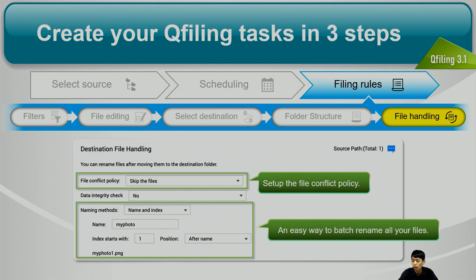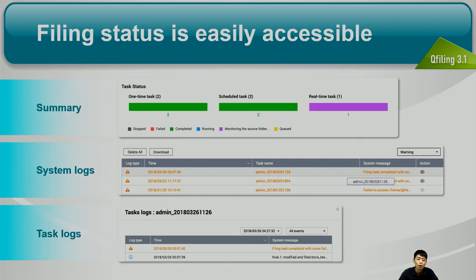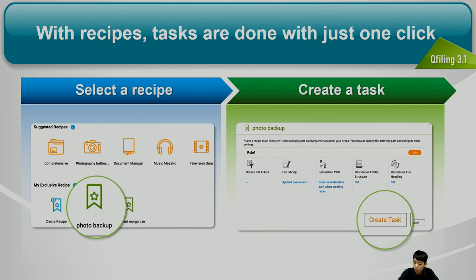In the last sub-step, set up the file conflict policy — if the file already exists, you can skip it, rename the new file, or override it. You can also easily batch rename all your files by setting up a renaming rule. After creating the QFiling task, the user interface gives you an overview of all your data with a summary of task statuses. You can also set up recipes — a reusable rule set — so if you want to create a new task with the same settings, you just use the recipe without setting everything up again.